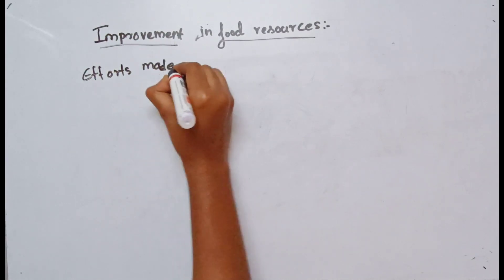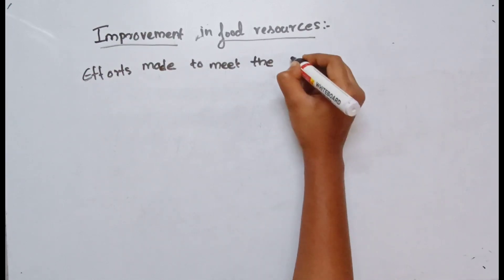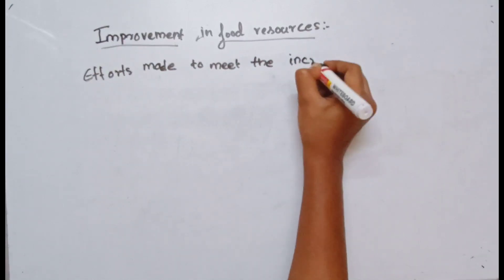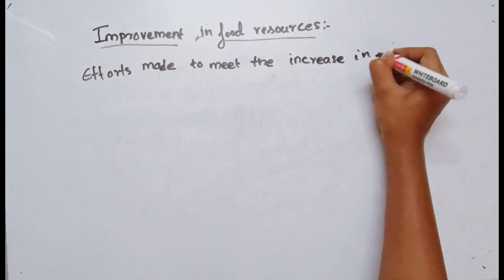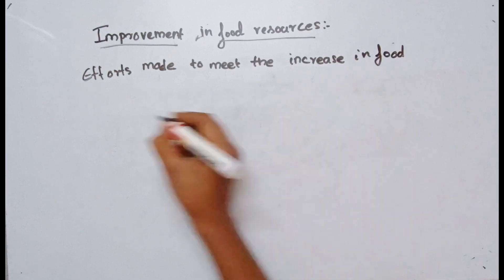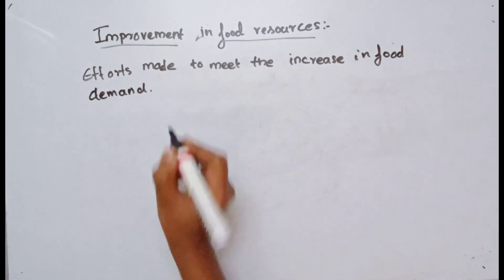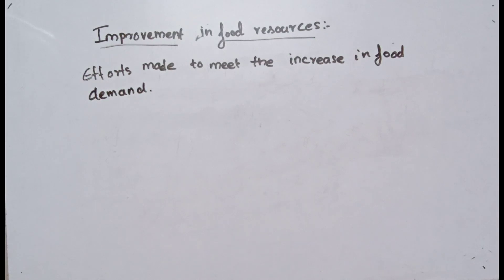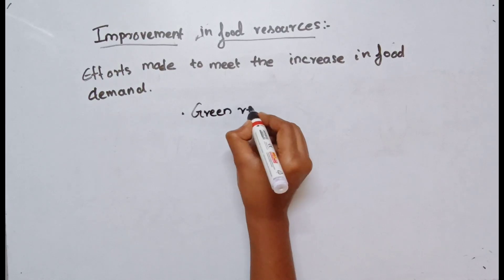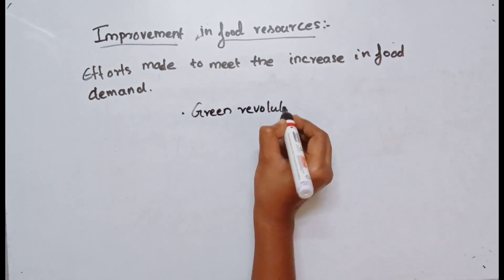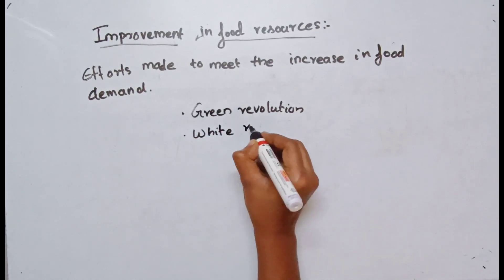What are the efforts made to meet the increasing food demand? The efficiency of crops and livestock must be developed. The main efforts are two programs: the Green Revolution and the White Revolution. We are talking about this in the context of India.